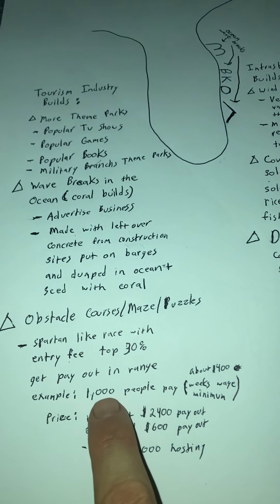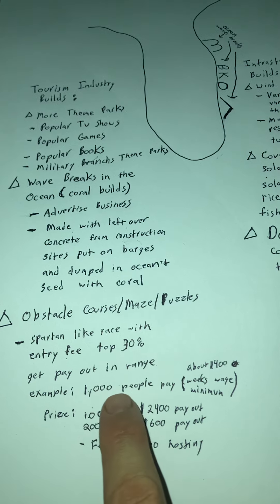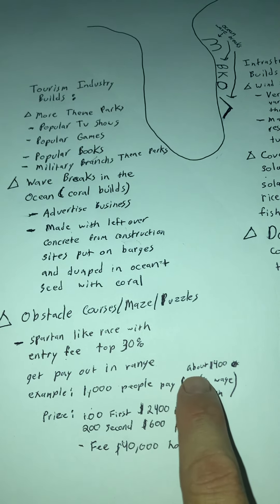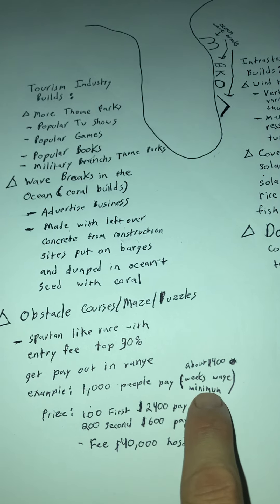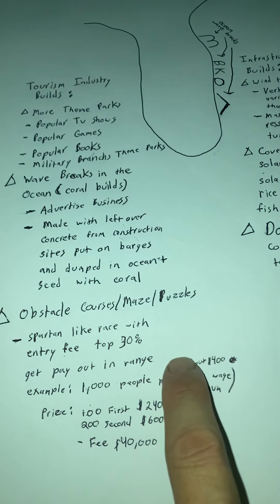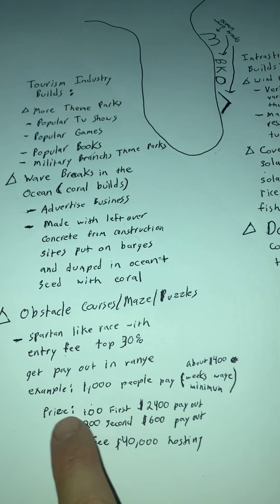The example would be about a thousand people. They'd pay about $400 or a week's wage of minimum wage. So they'd have like a week's worth of minimum wage saved up. The prize,